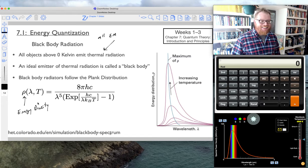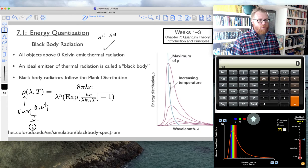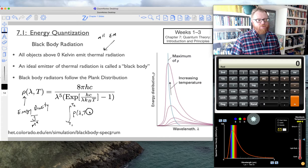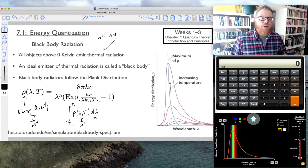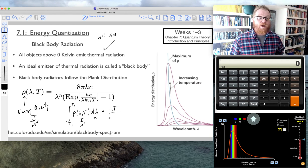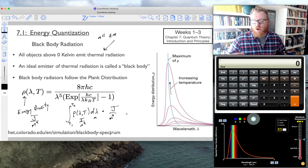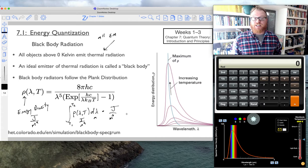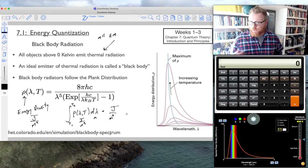The energy density will have units of joules per meter to the fourth power. However, if we were to integrate this energy density, so if I integrate this from some λ1 to λ2, this ρ as a function of λ and T times dλ, well, dλ has units of meters, the Planck distribution has units of joules per meter to the fourth power. So when we carry out this integration, we truly get an energy density in joules per meter cubed.